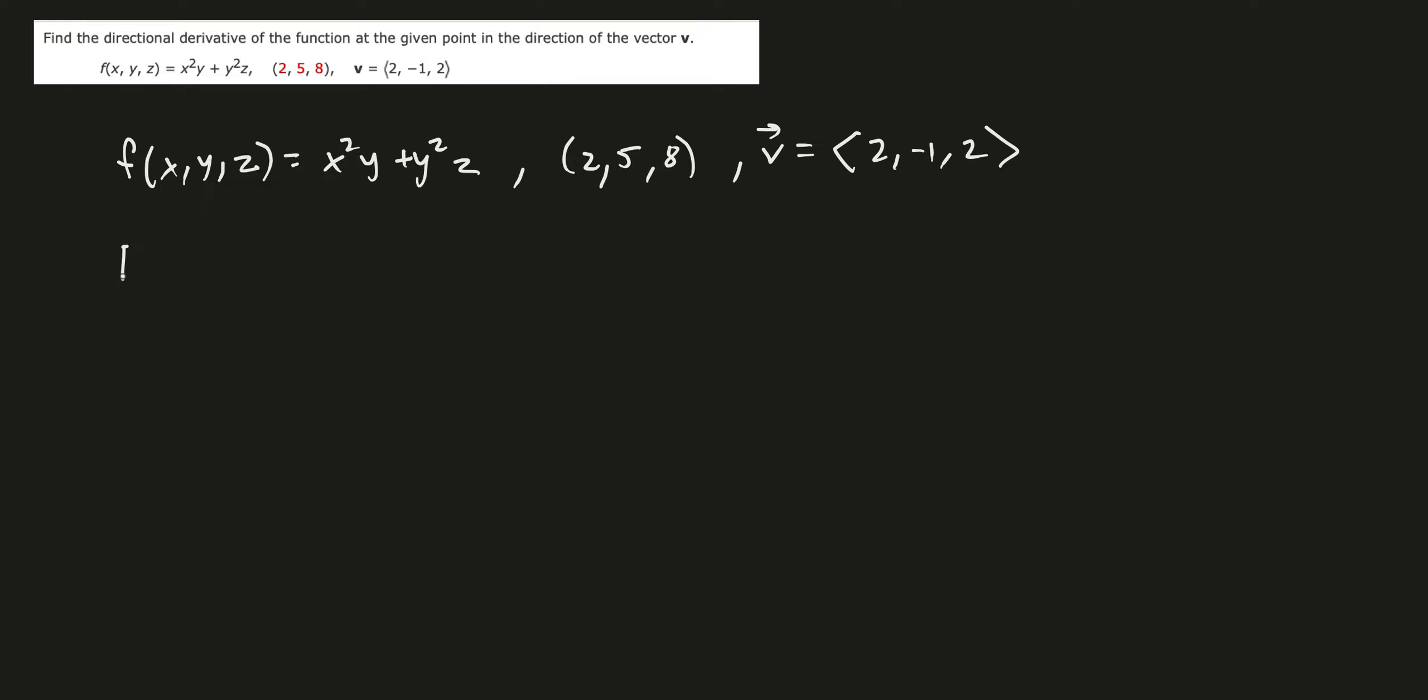So first we need to know that we want to find the direction in the direction of the vector v of our function f is equal to the gradient of the function f times, not just the vector v, but the unit vector that we can get, which is basically vector v over the magnitude of vector v.